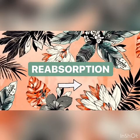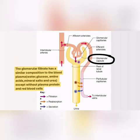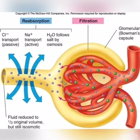For reabsorption, useful substances like water, glucose, amino acids, sodium and chloride ions are reabsorbed at the different parts of the tubule into the blood capillaries by osmosis or active transport.